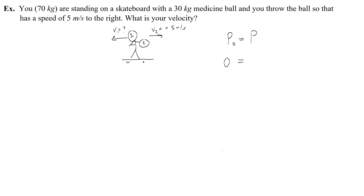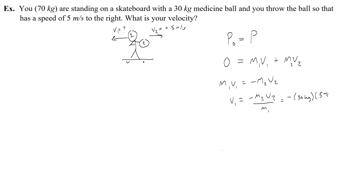At the end, you will have a momentum of m₁v₁ and the momentum of the other object m₂v₂. To solve for your velocity v₁, subtract m₂v₂ from both sides, then divide by your mass. This gives: v₁ equals negative 30 kilograms times 5 meters per second, over 70 kilograms — your mass. Kilograms cancel, and 30 times 5 over 70 gives about negative 2.14 meters per second, which makes sense because you're going to the left.